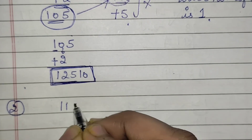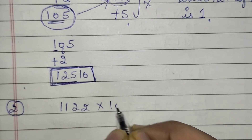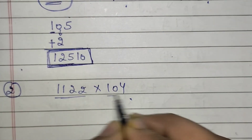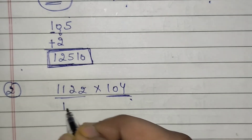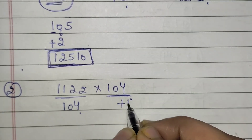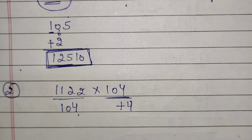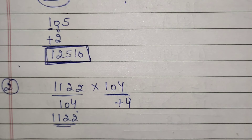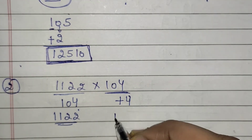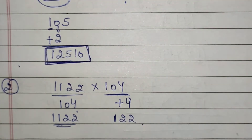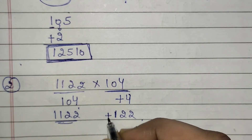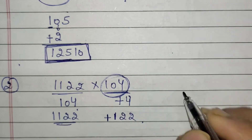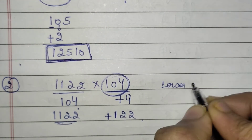Let us take another example: 1122 into 104. 104 is how much above 100? It is above by 4. And 1122 is how much above 1000? It is above by 122. In the lower digit number 100, the number of zeros is 2. So while doing addition, you have to convert your deviation plus 4 to a 2-digit number — write 04, skipping the first place.